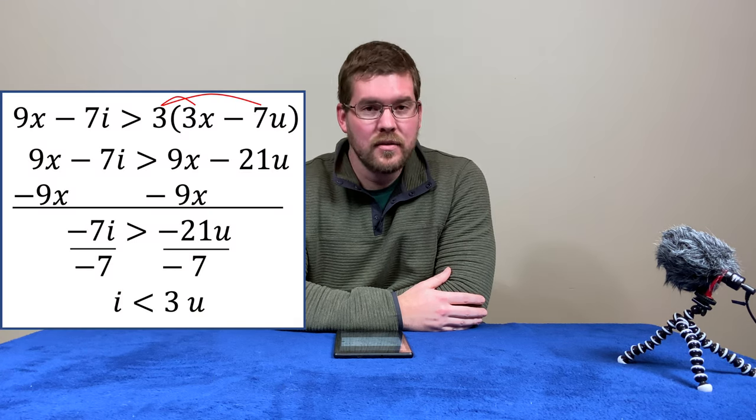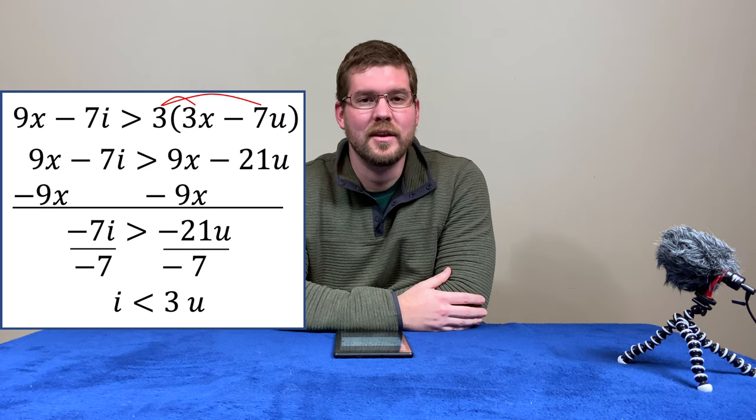So we're left with an i on the left side, and we have the less than sign, and then we have 3u.